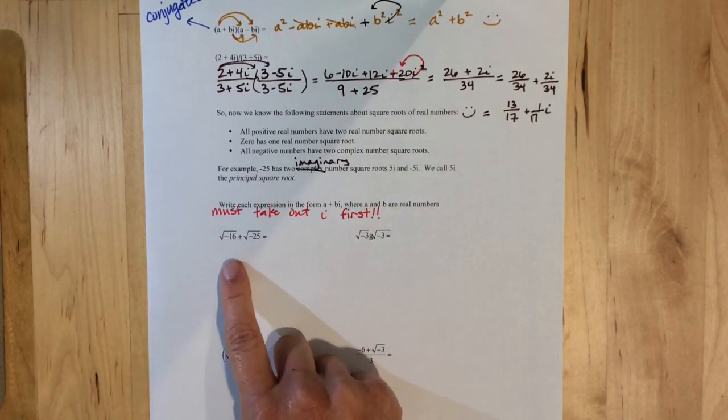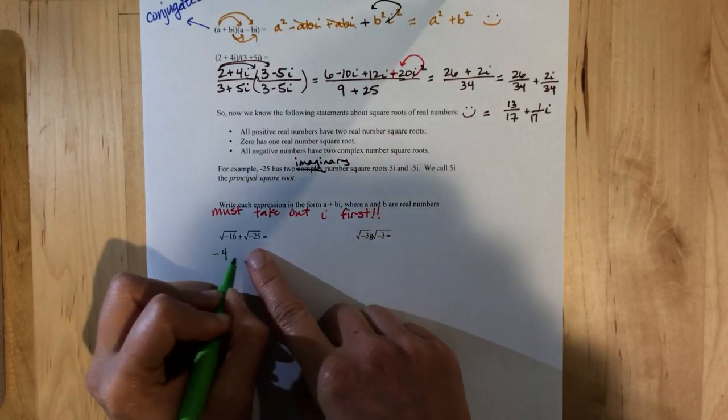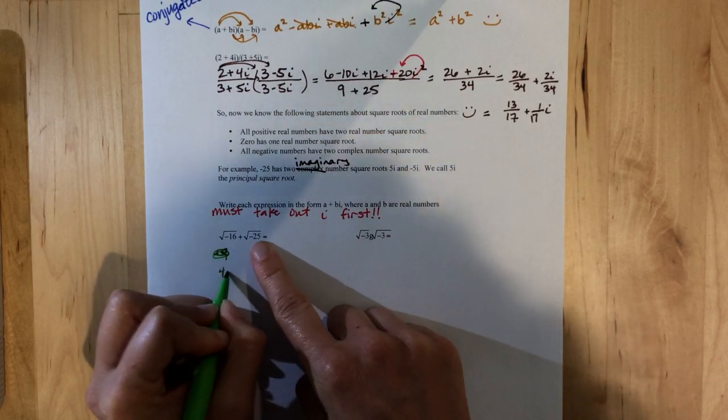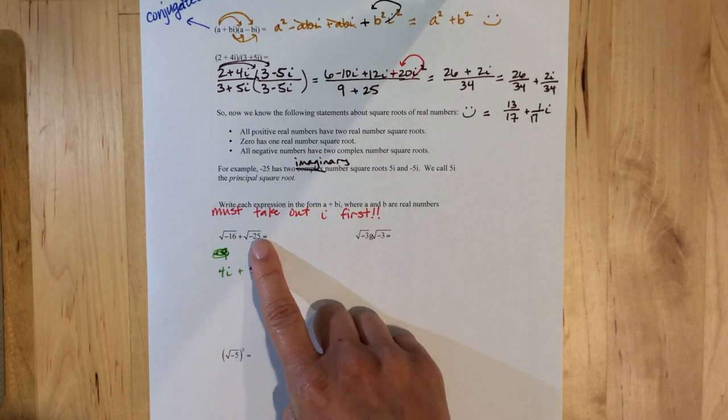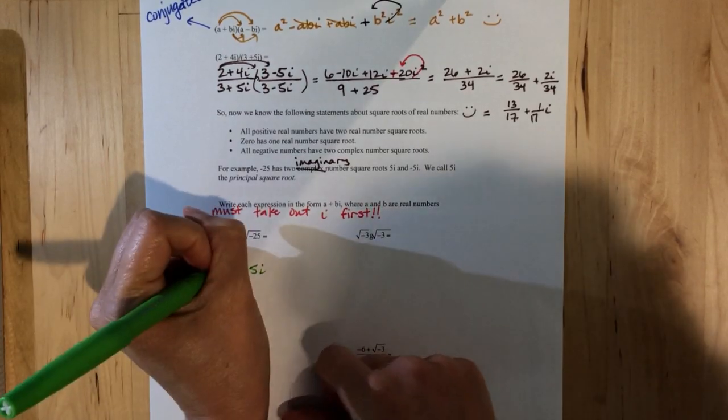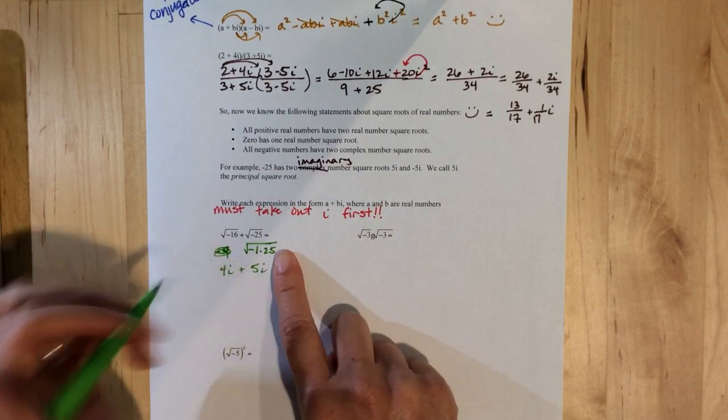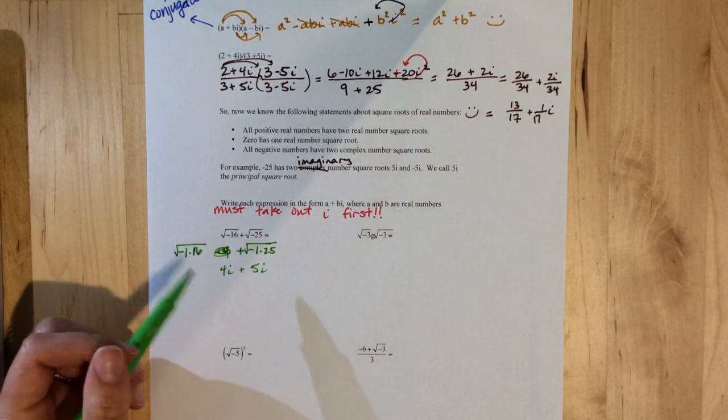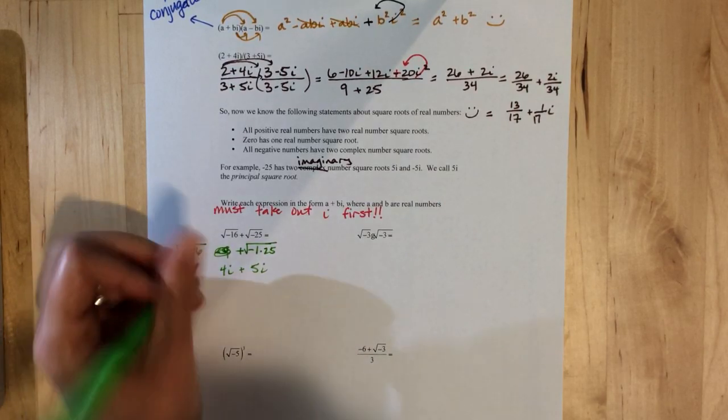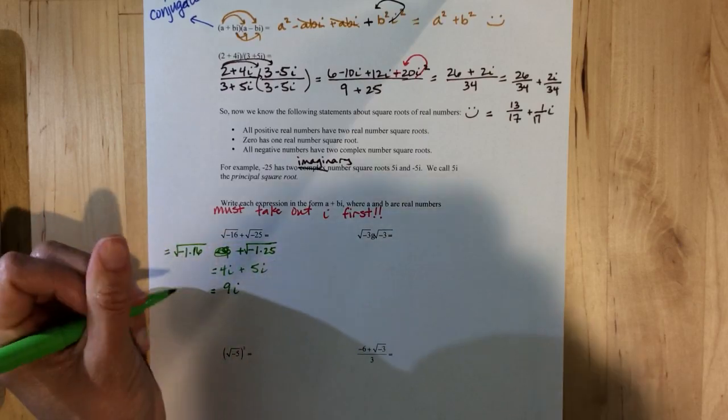So like here for this one, this is just 4i plus 5i, right, because the square root of 25 is 5, and the square root of negative 1 is i, because you're envisioning it like negative 1 times 25, and so you're pulling them out separately. So this would be the square root of negative 1 times 16, and how we are getting 4i plus 5i, which is equal to 9i.